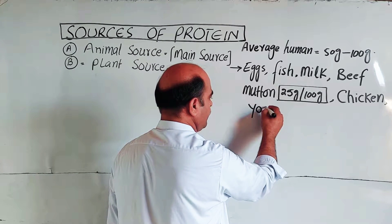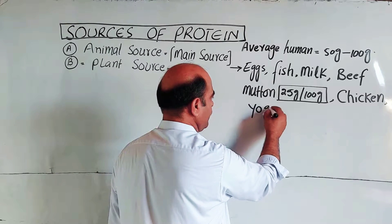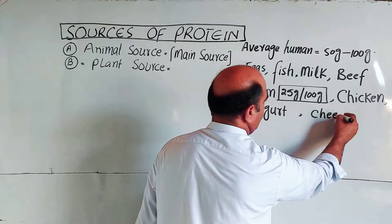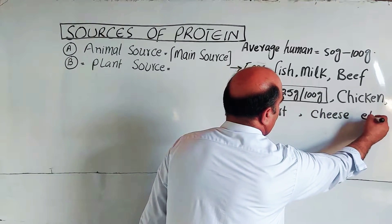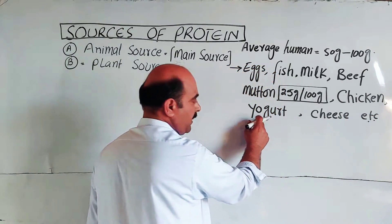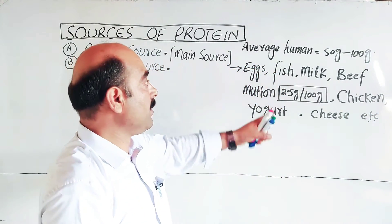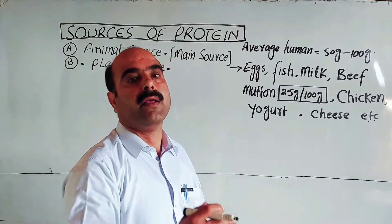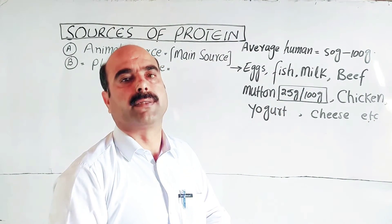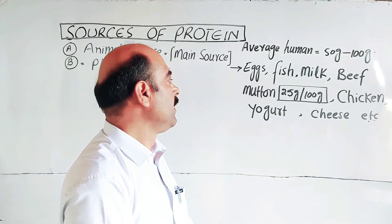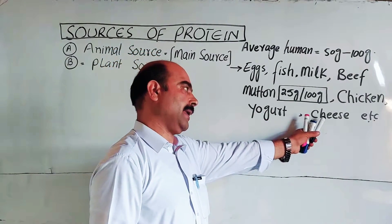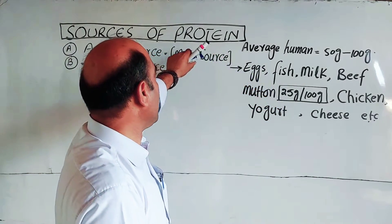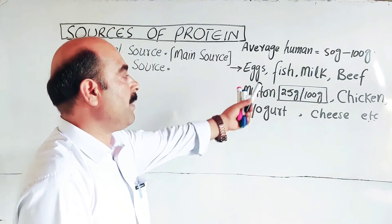Yogurt and cheese are also protein sources. Yogurt is made from milk. The yogurt is made by fermentation of milk, and cheese is also made from milk. These are animal-derived food products.